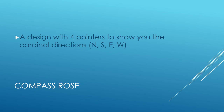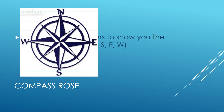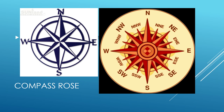Our next word is compass rose — and no, it's not a flower. It is a design with four pointers to show you the cardinal directions: north, south, east, and west. You should remember this from elementary school. The one on the left is very simple — just north, south, east, west. The one on the right is much more complex, with secondary directions like west-southwest. These are really useful for weather when talking about wind direction, especially if you're navigating on the water or sailing.